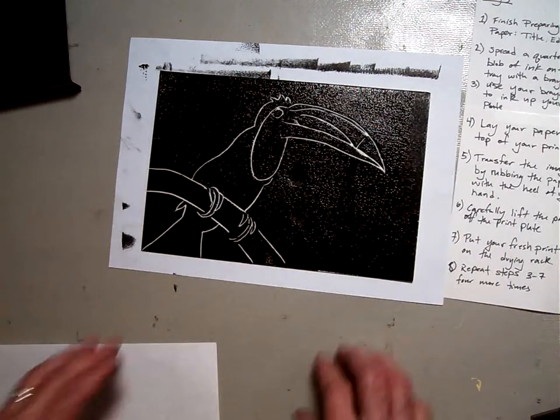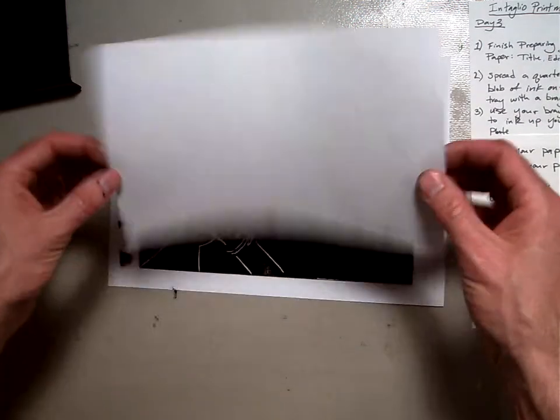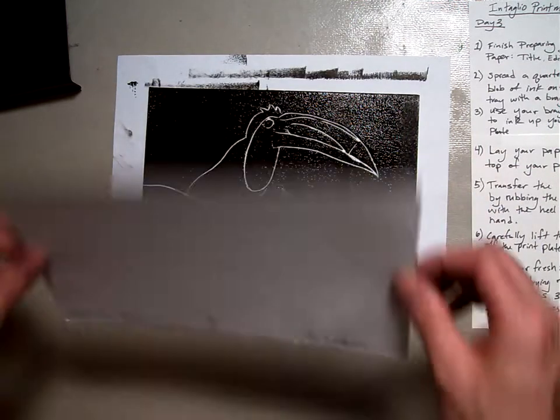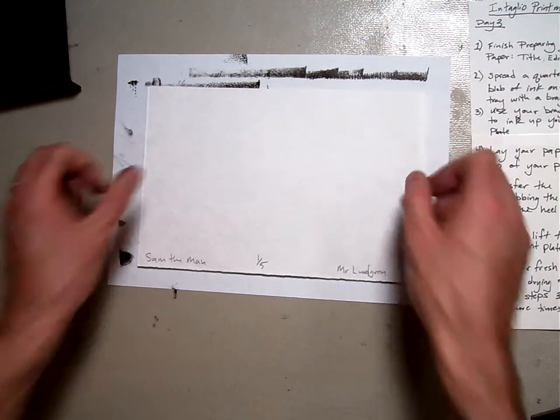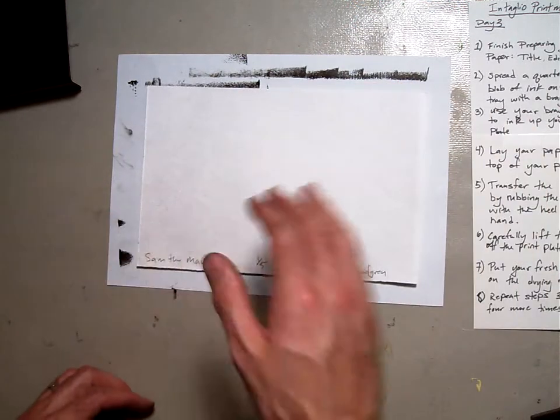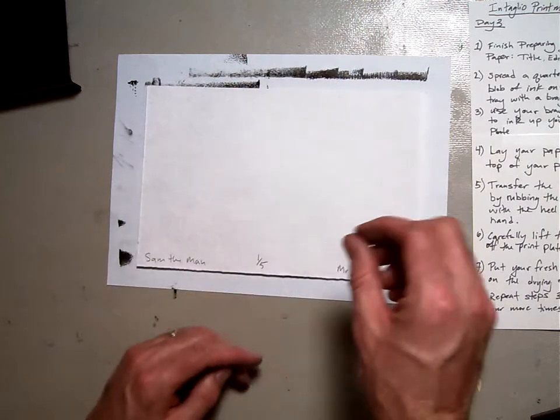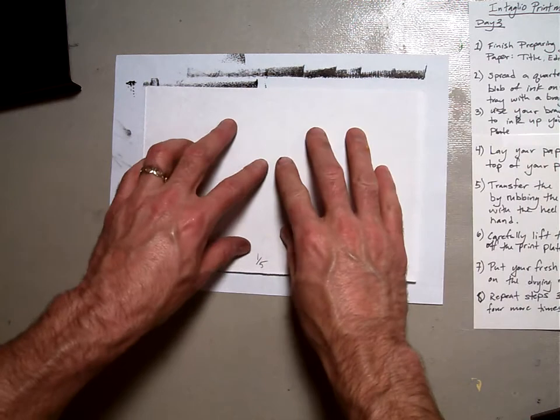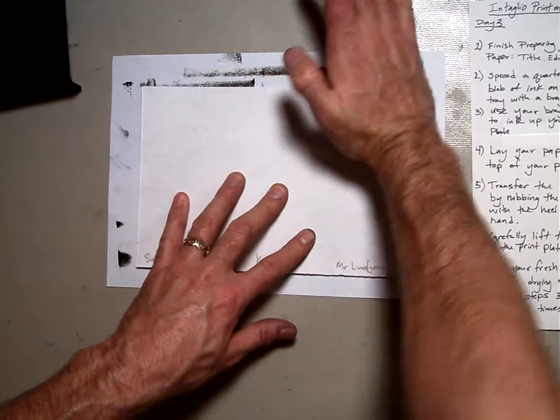Then, take your inked up print plate. And you're going to use your print paper with the name pointing up because that's going to be the back. You're going to set it on top of your print plate. And it's essential that you set it on top so that as you're rubbing it with the heel of your hand, you can get a nice even pressure. If you've got it flipped around the other way, the print plate is too heavy and thick and you can't push through it properly. So make sure that you have your paper on top.